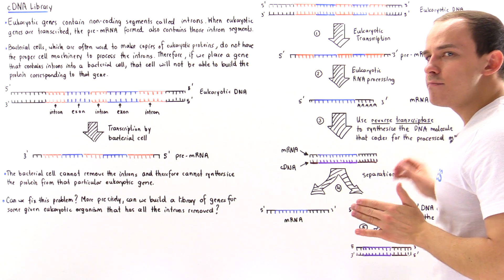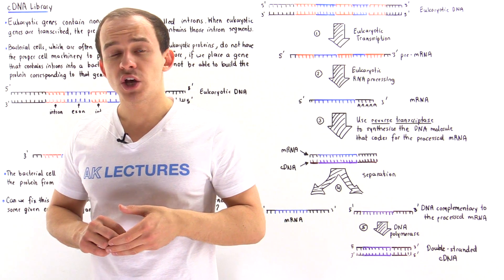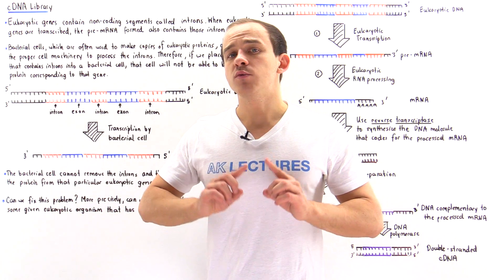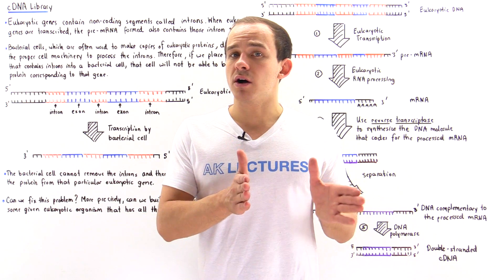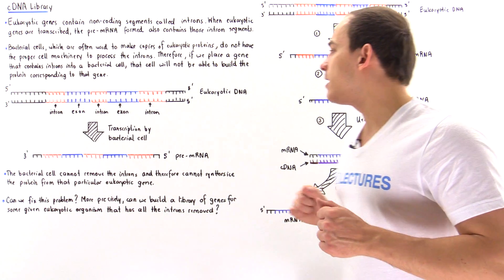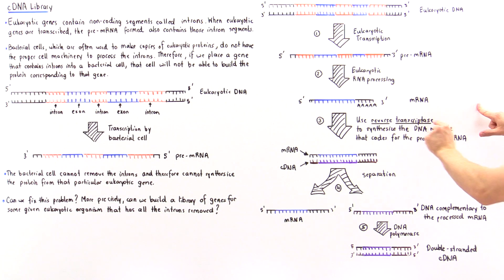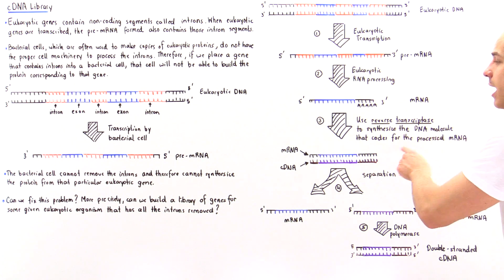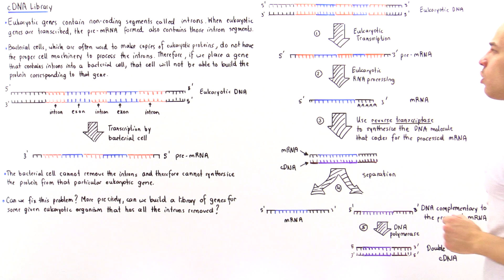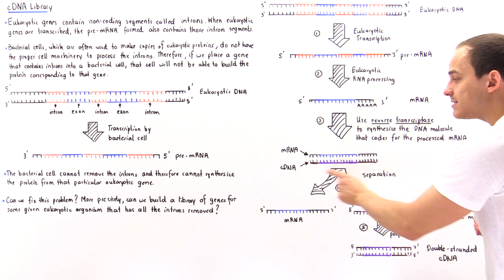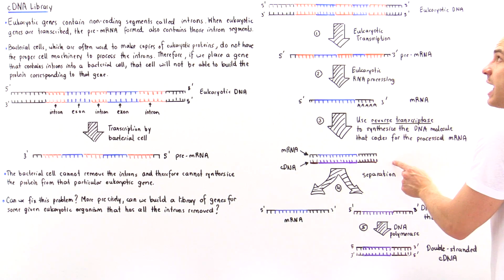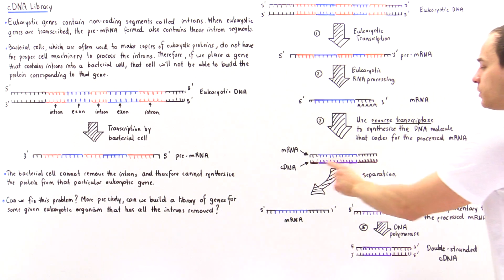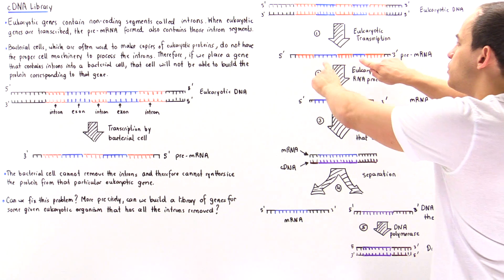Once we form the fully processed mRNA molecule that no longer contains intron sections, we mix it with a special enzyme known as reverse transcriptase. Reverse transcriptase uses the mRNA molecule to form a DNA molecule. We take this mRNA, mix it with reverse transcriptase, and form a DNA molecule complementary to that fully processed mRNA — which no longer contains introns. This complementary DNA will only contain the sequence of nucleotides corresponding to the exon sections.